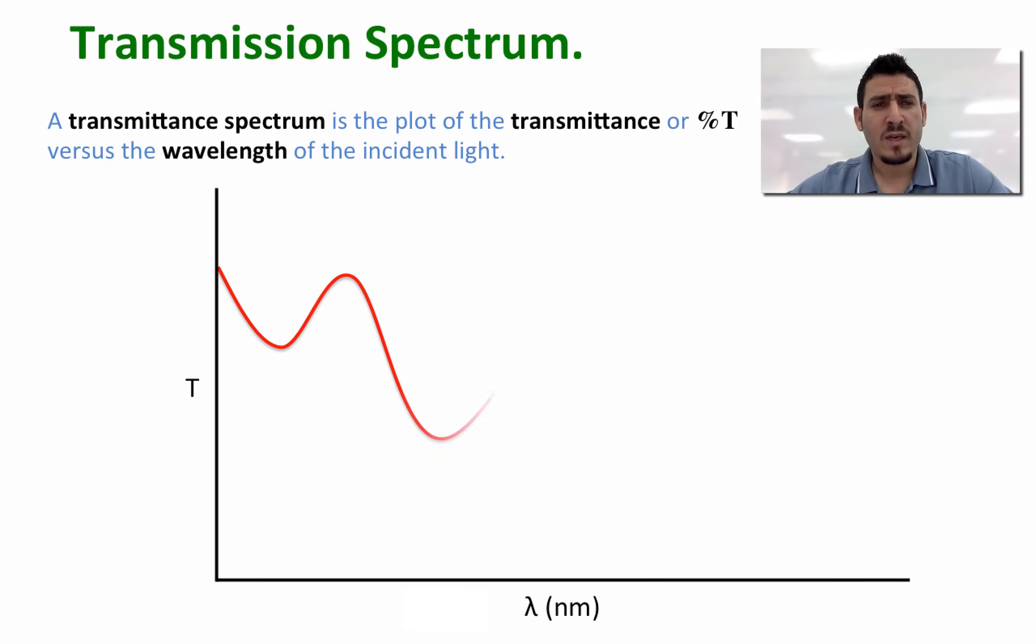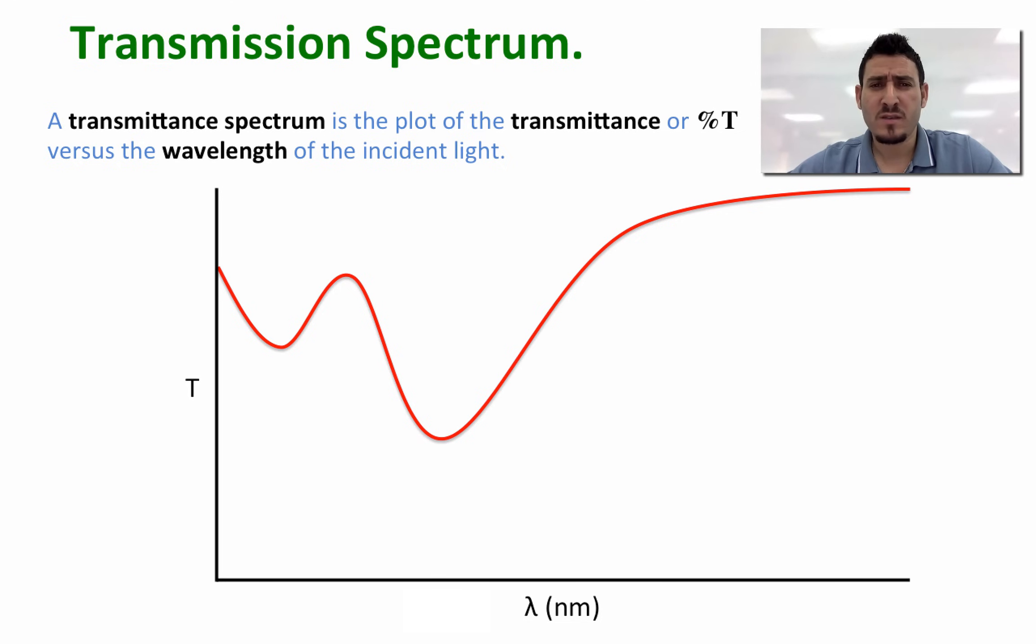In a similar way, we can define the transmittance spectrum, which is the plot of the transmittance or percent t versus the wavelength of the incident light.